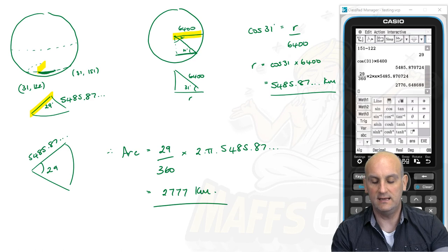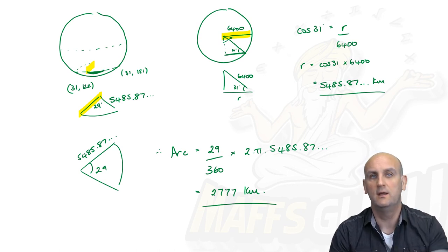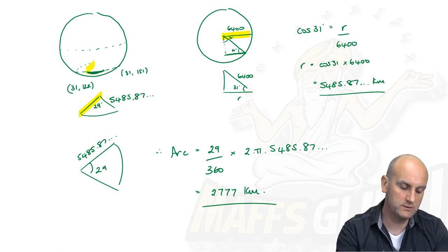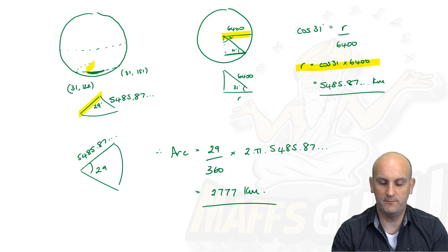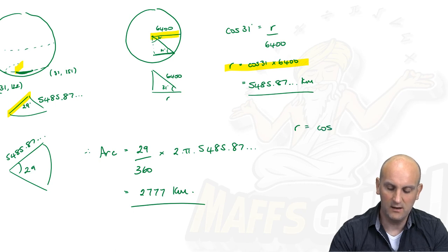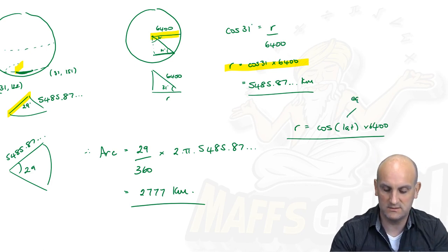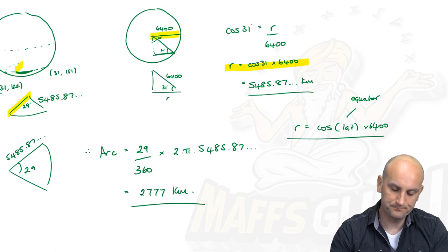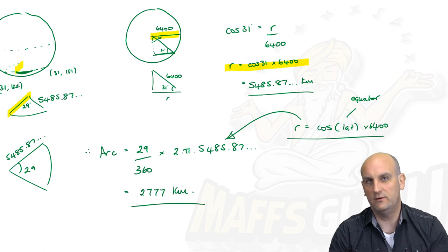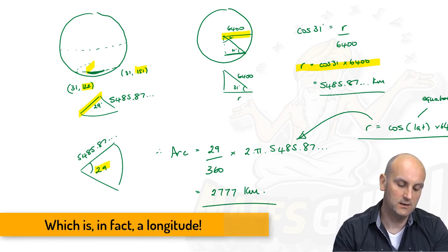You could summarise this in your summary book: when two places are on the same line of latitude that is not the equator, the new radius r equals cosine of the latitude angle times 6,400. Then use that new r in the arc length formula as before. The angle between the two places is the difference in their longitudes.